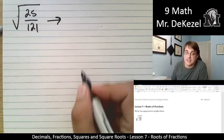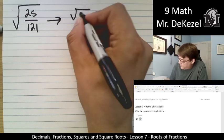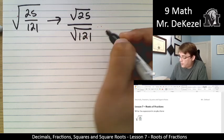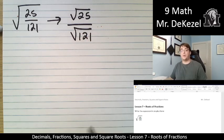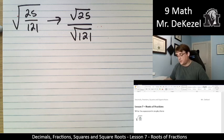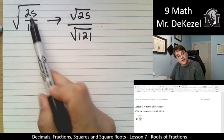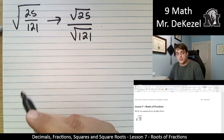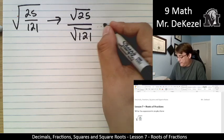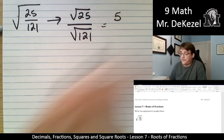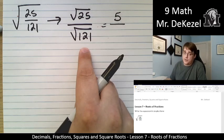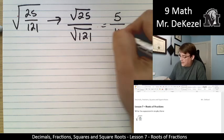This is the same as the root of 25 divided by the root of 121. This works really well when we know the square root of these numbers. When these are perfect squares, we can break them up and just square root them ourselves. The square root of 25 we know is 5, and the square root of 121, one of my favorites, is 11.